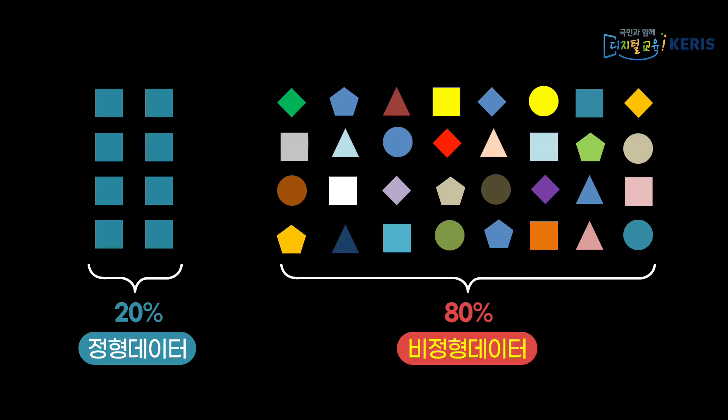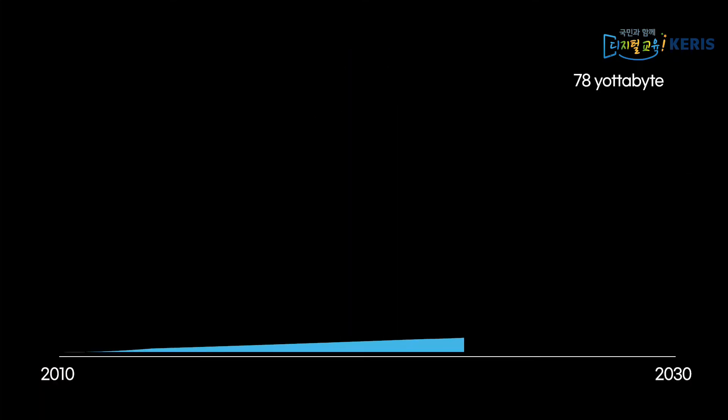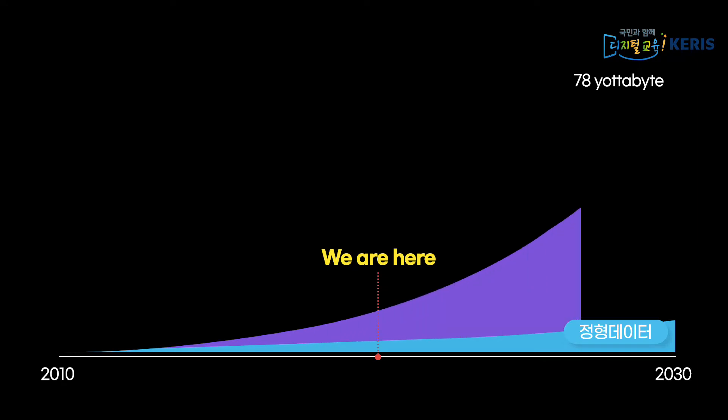여러분은 주로 휴대폰으로 무엇을 하시나요? 친구들과 메시지를 주고받거나 SNS에 댓글을 달고 영상을 시청하는 데 대부분을 사용하고 계실 텐데요. 이렇게 휴대폰으로 하는 대부분의 행동이 비정형 데이터의 생산과 관련된 만큼, 스마트폰이 보급화된 이후 전 세계적으로 비정형 데이터의 생산이 기하급수적으로 증가하였습니다.